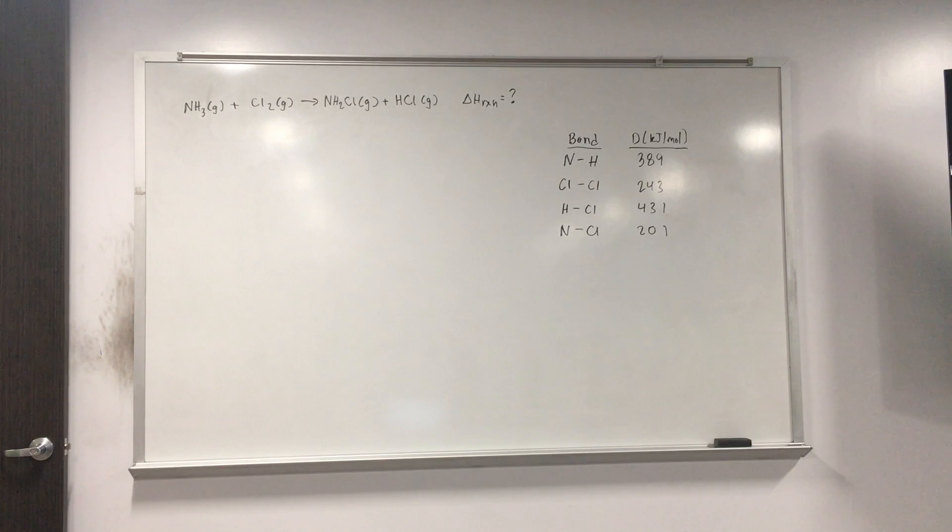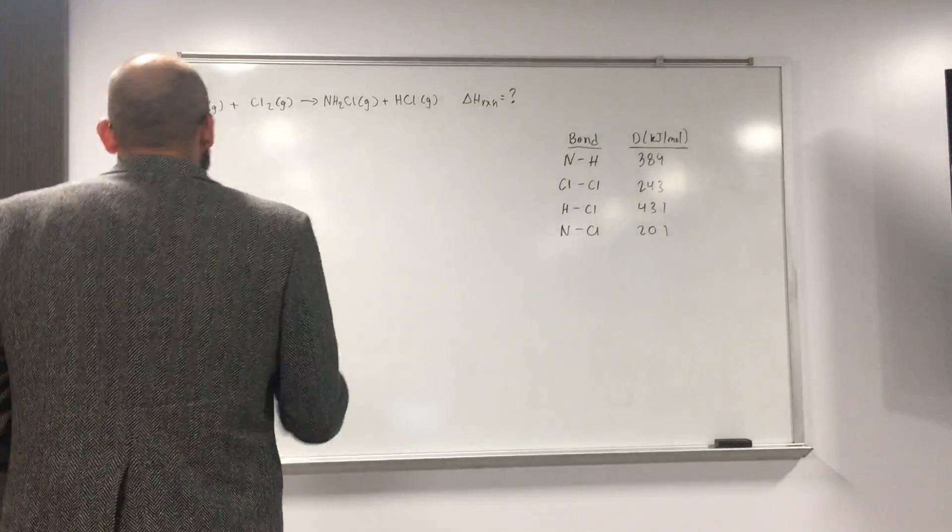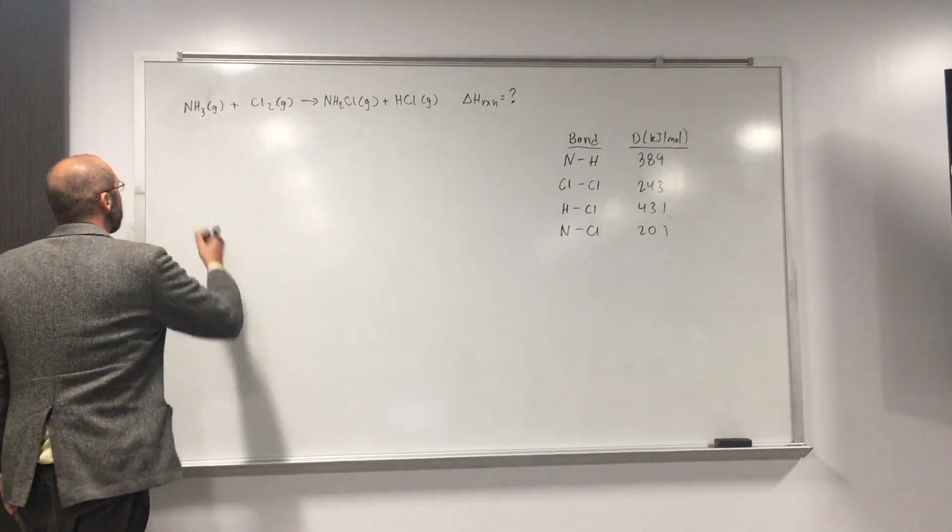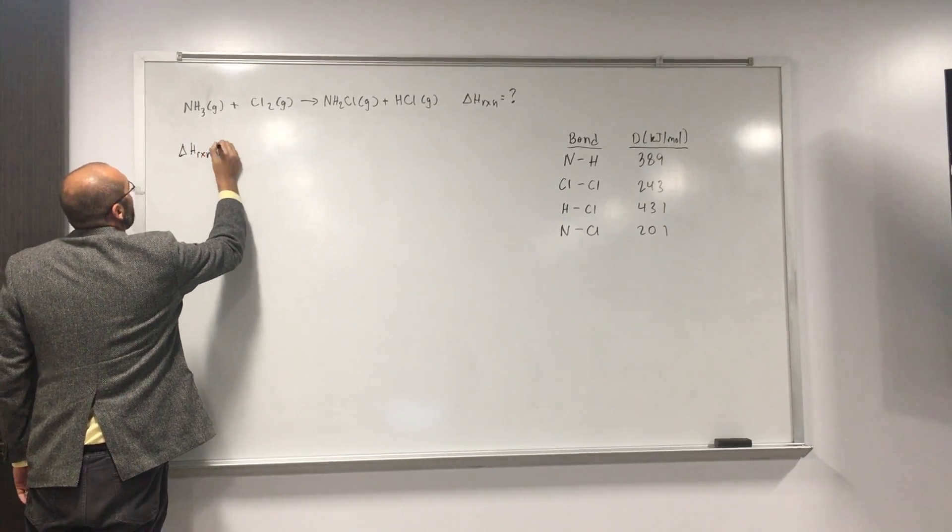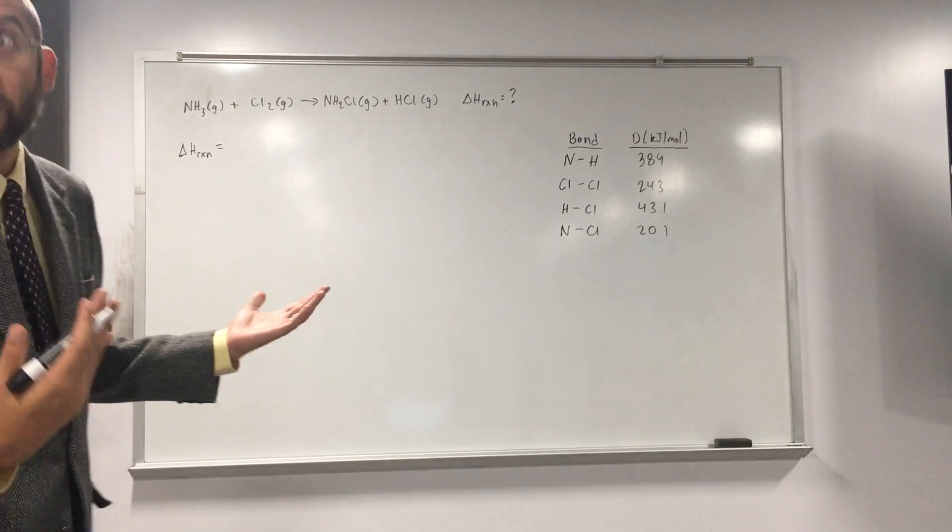So we're gonna go ahead and do this problem together. So if you don't mind, we're recording a video right now. So whenever you do these types of problems, you gotta remember that the bond dissociation energy, to calculate the enthalpy, you just take the reactants, the total energy of the reactants, subtract them from the total energy of the products. This is for bond dissociation energy.